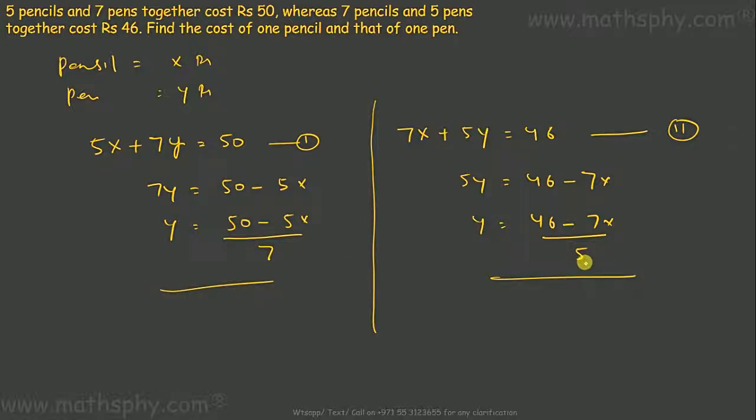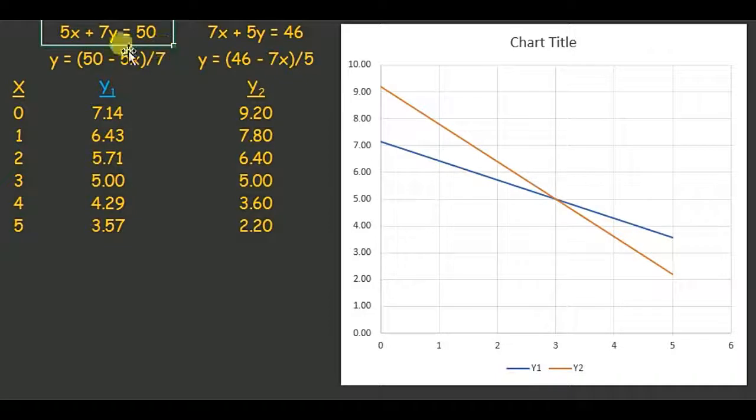Let's put them into the graph. I have this equation 5x plus 7y equals 50, which gave me y equals (50 minus 5x) over 7. And this equation 7x plus 5y equals 46, which gave me y equals (46 minus 7x) over 5.